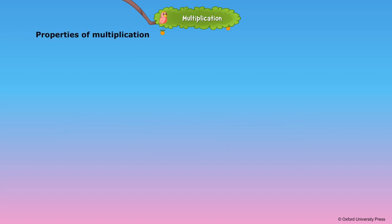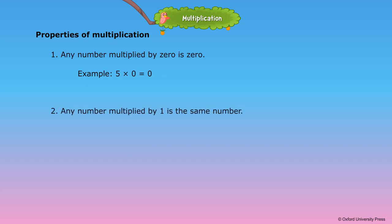Properties of multiplication. Property 1: Any number multiplied by 0 is 0. For example, 5 × 0 = 0. Property 2: Any number multiplied by 1 is the same number. For example, 6 × 1 = 6.